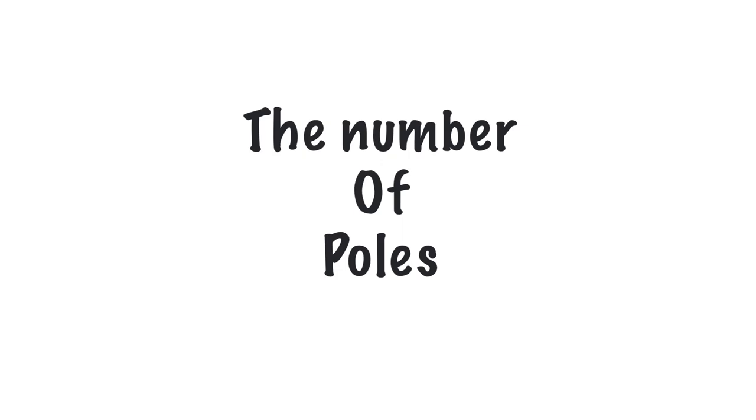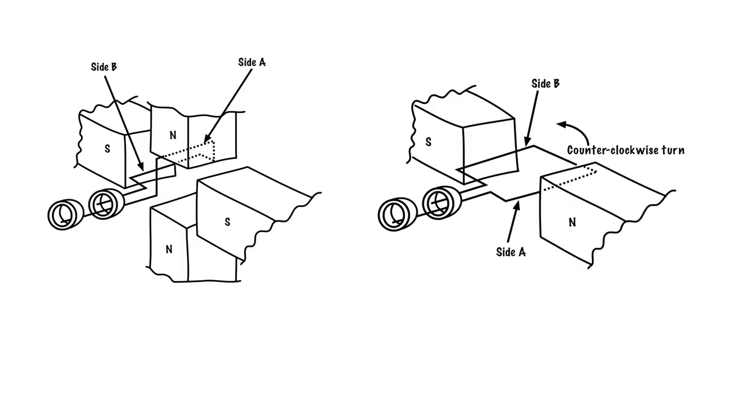The second factor that affects frequency is the number of poles. Now if you look here, I got my two-pole alternator and we know that we went from north to south, from south to north, and it created a full sine wave. What happens here is if we look at the four-pole alternator, well we end up doing that in half the amount of distance.